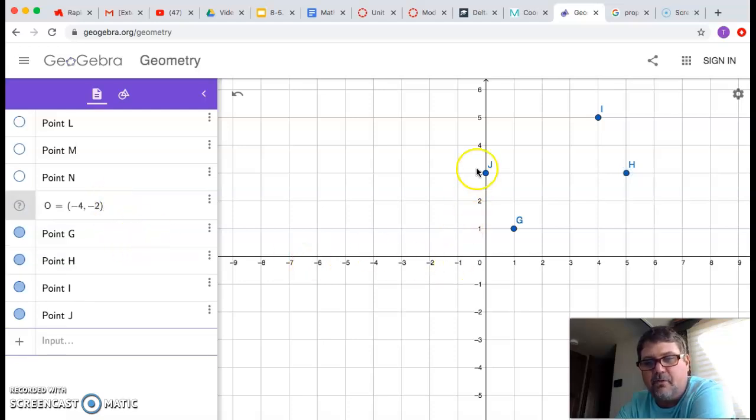All right, so we've graphed these points and it clearly does look like a rectangle, right? But again, saying something looks like it is not proof that it is.